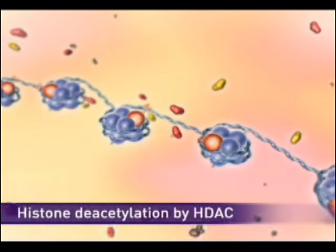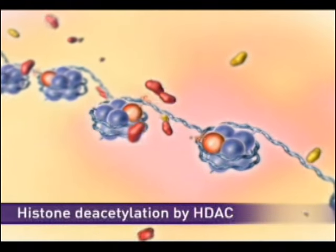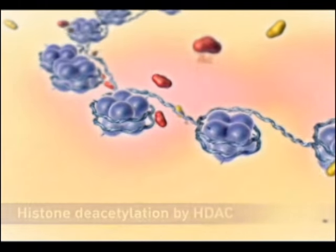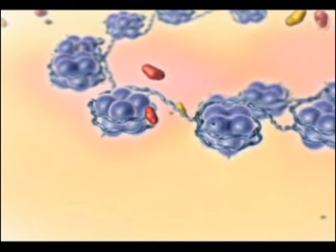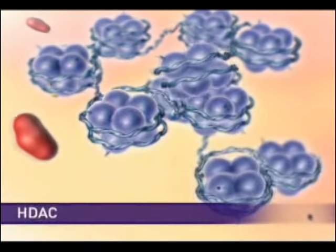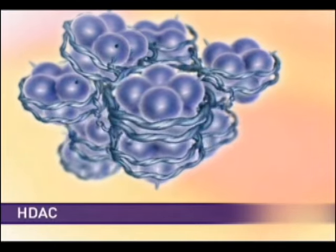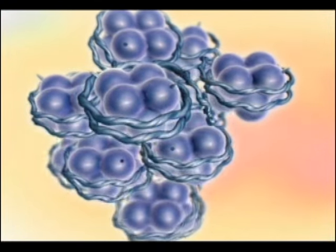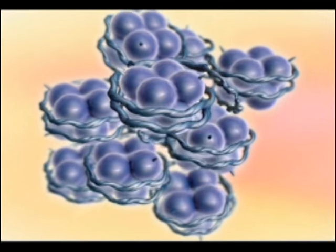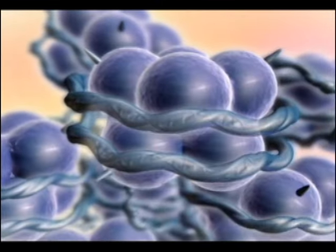Conversely, deacetylation of histones by HDAC results in tight coiling of the DNA and a closed chromatin structure. In some cancer cells, there is an overexpression of HDACs, an aberrant recruitment of HDACs, or an underexpression of HATs, resulting in hypoacetylation of histones and therefore a condensed or closed chromatin structure.